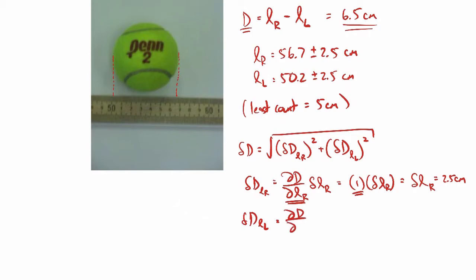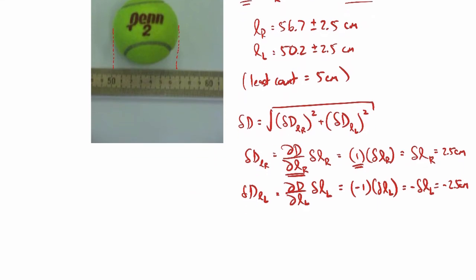You can do the same thing for L sub L. It'll look almost identical, except you put L sub L instead of L sub R. That derivative is minus 1, but that doesn't matter because we square the terms. When I plug in minus 2.5 and positive 2.5, it gets squared, so it doesn't make any difference.